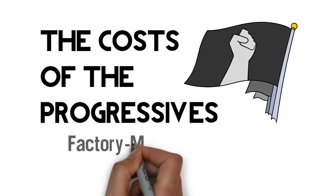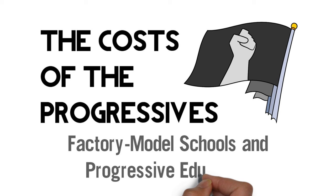Episode 2. Factory Model Schools and Progressive Education. In 1897,